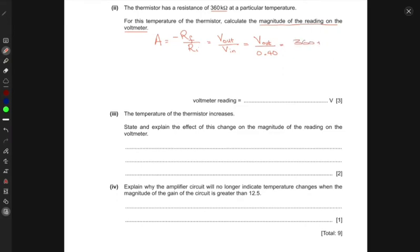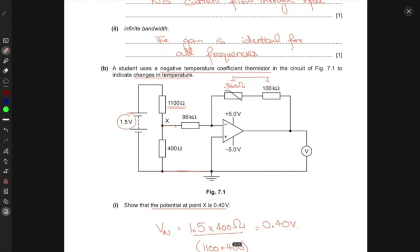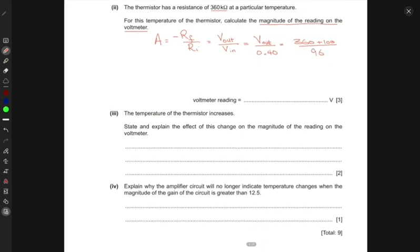R_F is the sum of those two resistors, 360 plus 100, and R_I is 96 kilohms. This gives V_out to be 1.9 volts. We don't need to write the kilo (10^3) because it cancels from both numerator and denominator. So V_out is 1.9 volts.